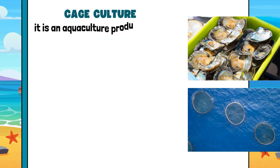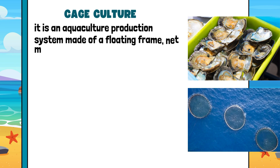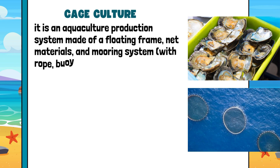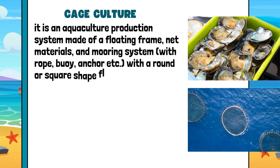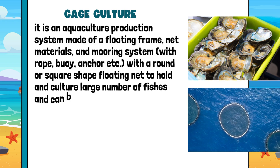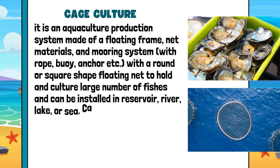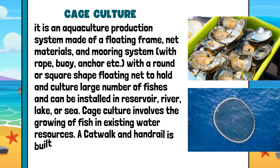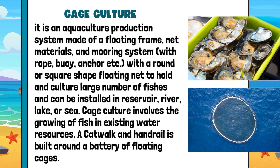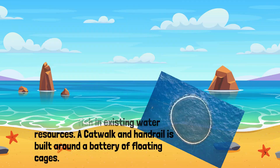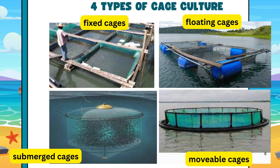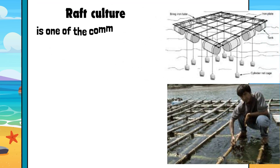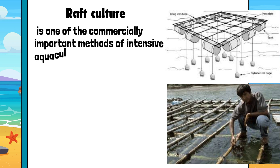Cage Culture is an aquaculture production system made of a floating frame, net materials, and mooring system with rope, buoy, anchor, etc., with a round or square-shaped floating net to hold and culture a large number of fishes. It can be installed in a reservoir, river, lake, or sea. Cage culture involves the growing of fish in existing water resources. A catwalk and handrail is built around a battery of floating cages. Cage culture is one of the commercially important methods of intensive aquaculture.